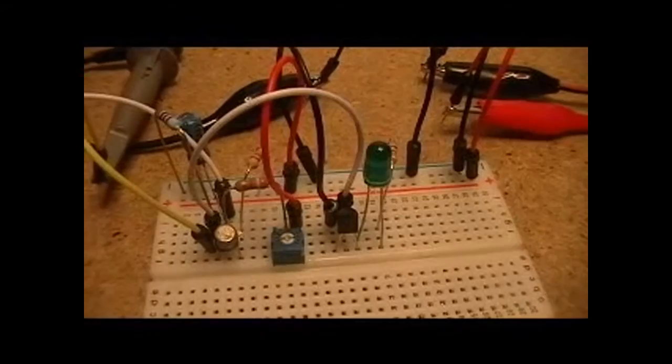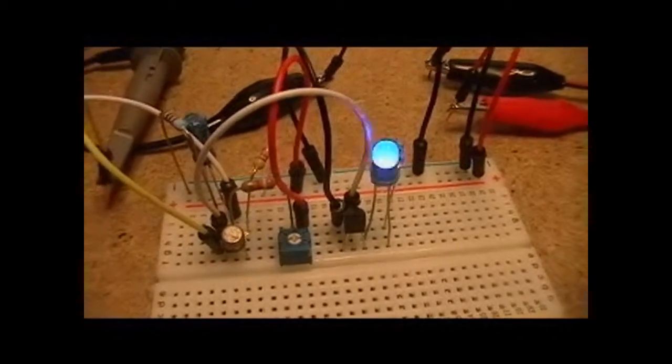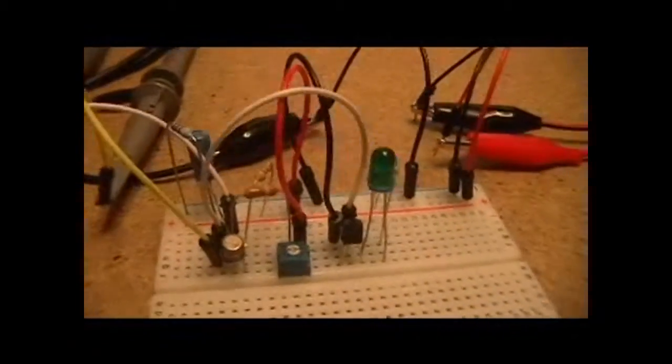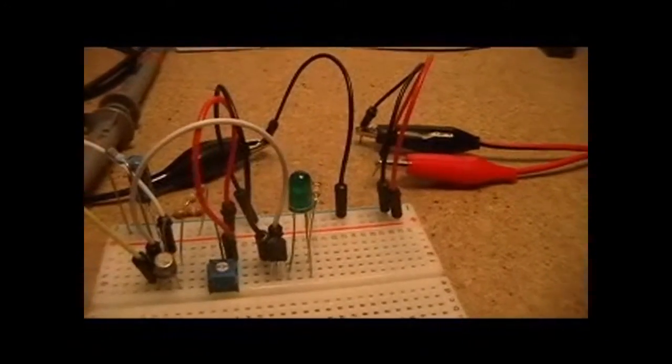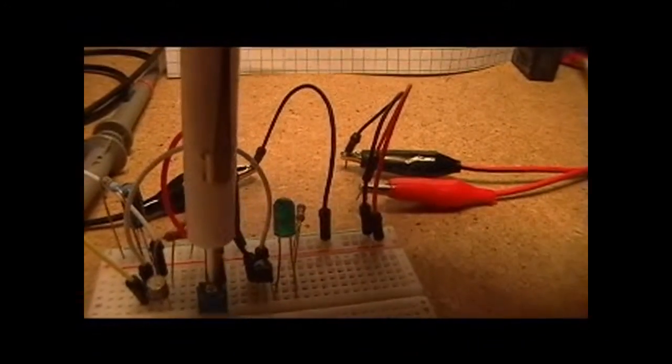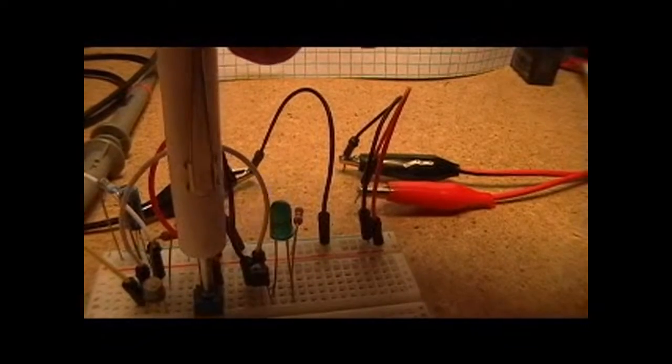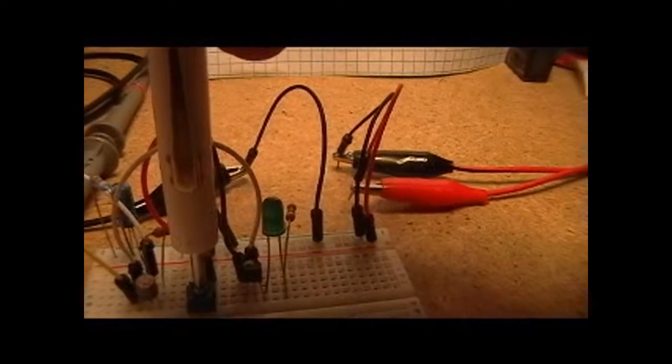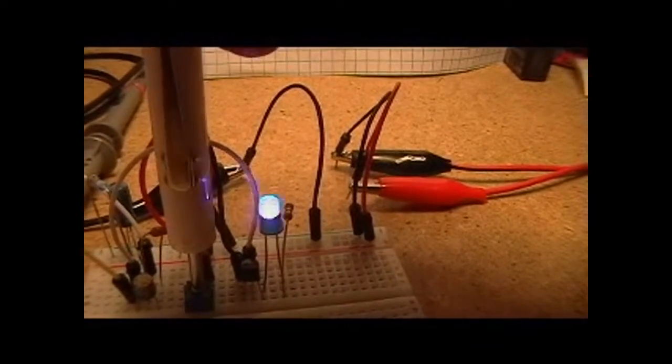Now you can change the frequency with which this flashes as an example. With the pot I have in place right now, I can adjust this a little bit, slow it down. As you'll see here, it's flickering a little less frequently.